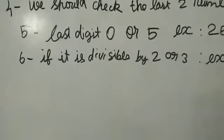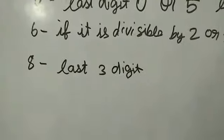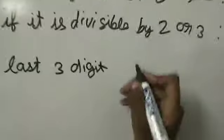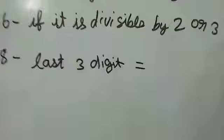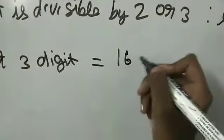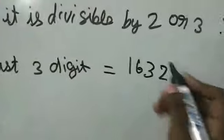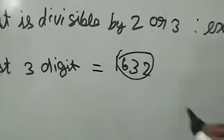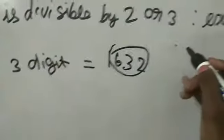7 is not there. For 8, we should check the last three digit number. Example: if they have given 1632, we should check these three numbers. It is coming in 8 table.